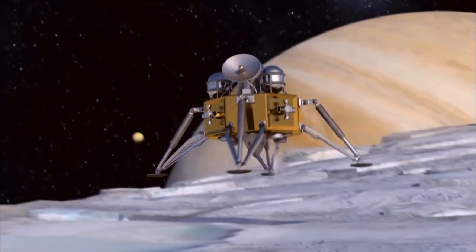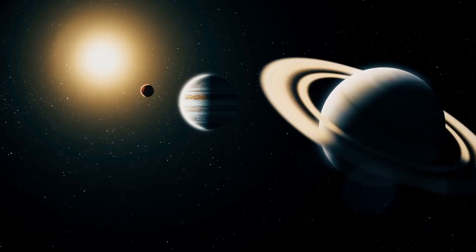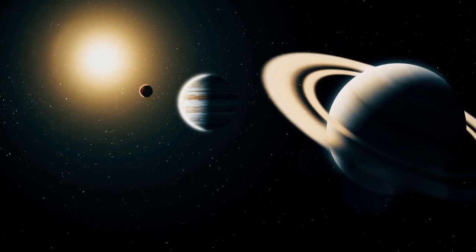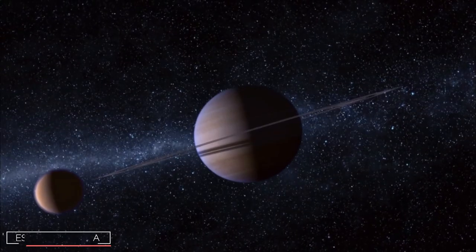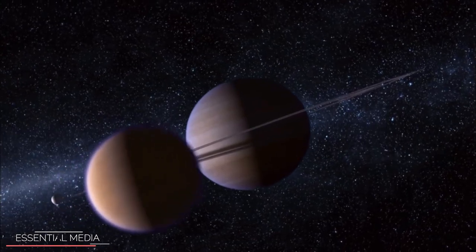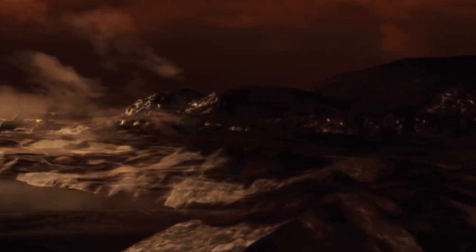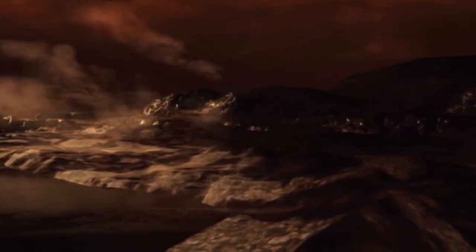NASA really wants to explore this moon because who knows what we'll find there. And Titan, which is the largest moon that orbits Saturn, seems to be more like a planet. It's bigger than Mercury and Pluto, and it's the only moon in the solar system to have a significant atmosphere which contains nitrogen, like the Earth's atmosphere, as well as methane, hydrogen, and maybe argon.